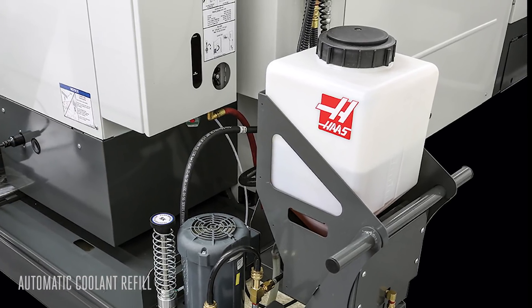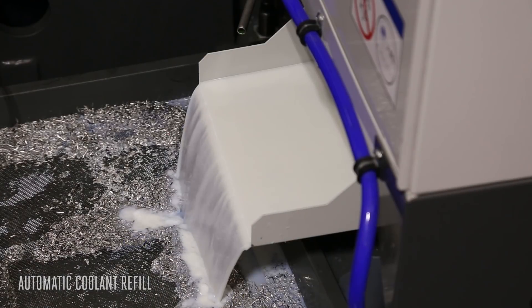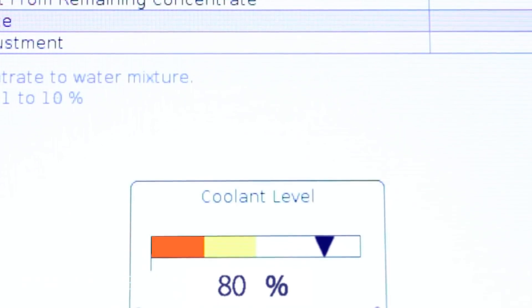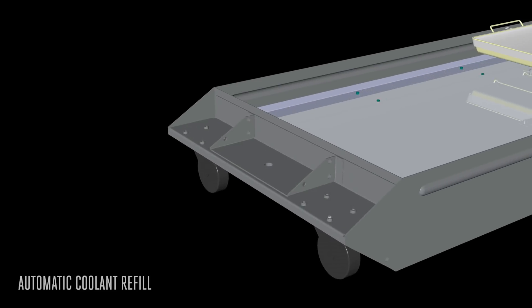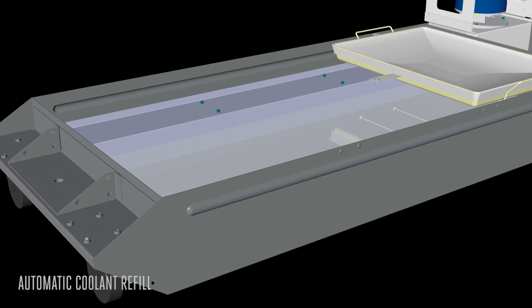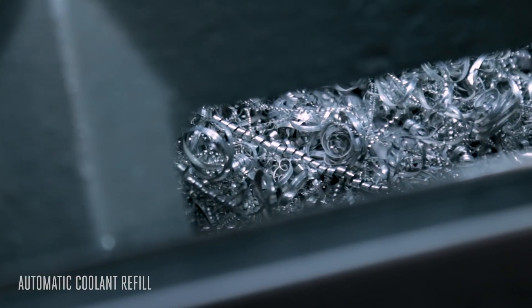Run your Haas machine with confidence knowing that your coolant mixture is precise and that the level is always correct. No need to worry if evaporation is changing your concentrate ratio or if chip carryout is lowering your coolant level.